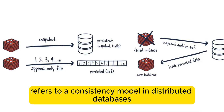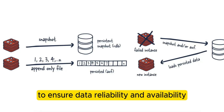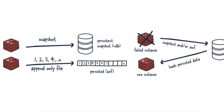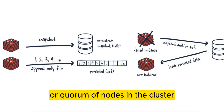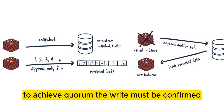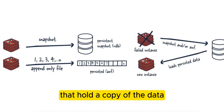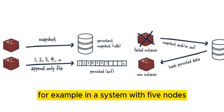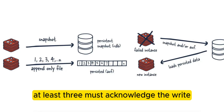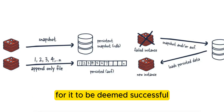Quorum writes refers to a consistency model in distributed databases to ensure data reliability and availability. In this model, a write operation must be acknowledged by a majority, or quorum, of nodes in the cluster before it is considered successful. To achieve quorum, the write must be confirmed by more than half of the nodes that hold a copy of the data. For example, in a system with 5 nodes, at least 3 must acknowledge the write for it to be deemed successful.